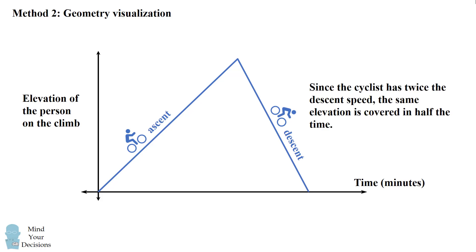Now the remaining portion of the cyclist trip will be the descent going back to the zero elevation. Since the cyclist has twice the descent speed, the same elevation is covered in half the time. So if the cyclist takes t minutes to ascend the climb, the cyclist takes t over 2 minutes to descend. So the total amount of time will be 3 halves t.